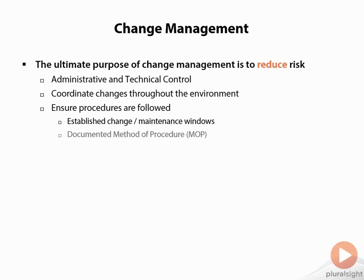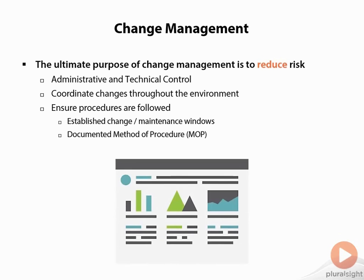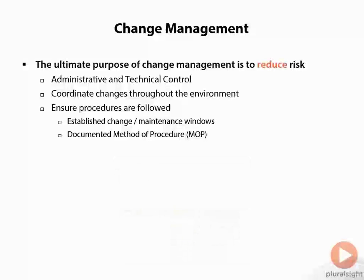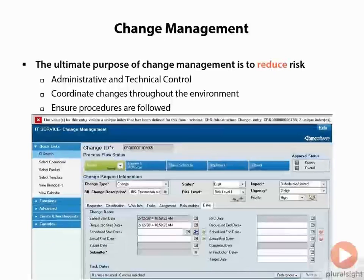Once we have a mature change management process in place, we need to document — document, document, document. It's extremely important. It's something that nobody likes to do, but it is extremely critical. In the event that something goes wrong, we have to understand what was done and, most importantly, how to get back out of it. Documented methods of procedure — a MOP — or a standard operating procedure — SOP — depending on what your organization calls it, you need to make sure that you have that in place.